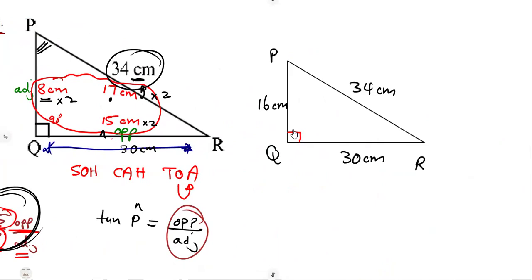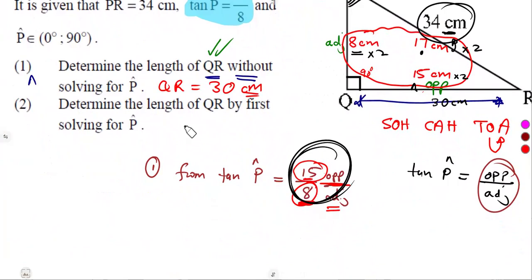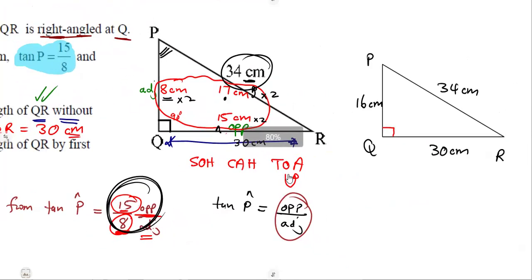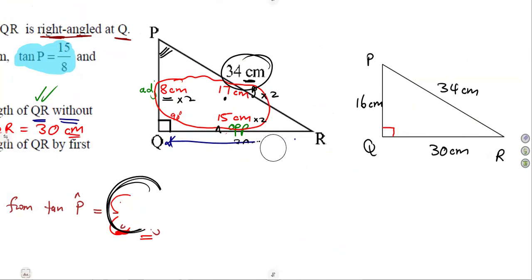On the other hand, question two asks: determine the length of QR by first solving for angle P. If we are to solve for angle P first, what will the length of QR be? The other question was without solving — this one requires us to solve for angle P first. When you solve for this angle P, it becomes easier to deal with.